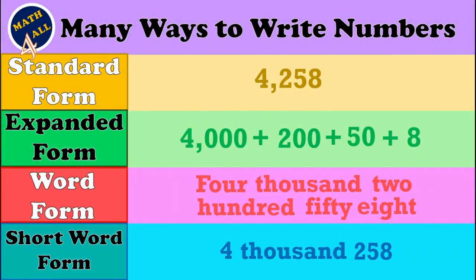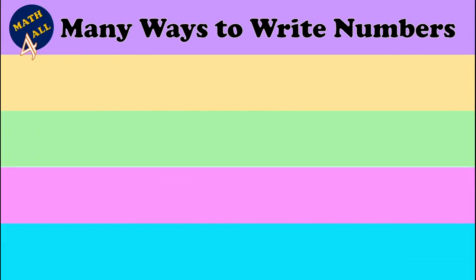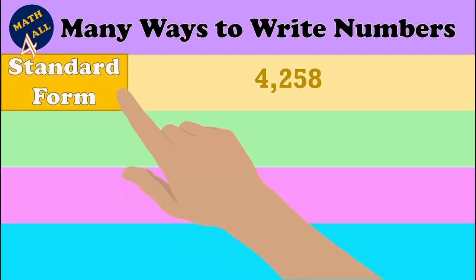There are many ways to write numbers. Let's go with the first way. Can you read this number: four thousand two hundred fifty-eight? When you see a number written in digits, this is called the standard form.